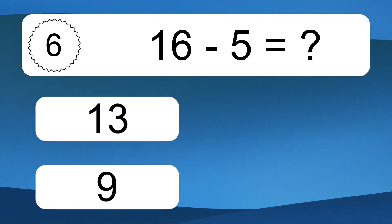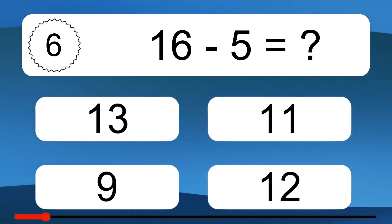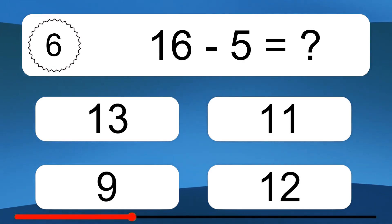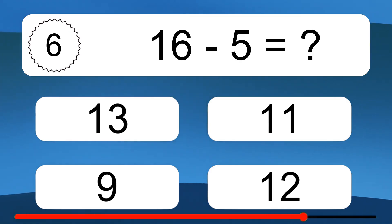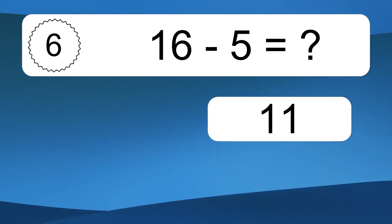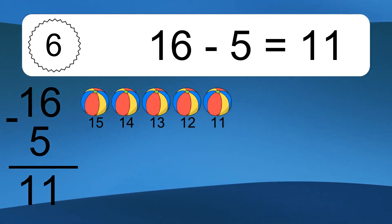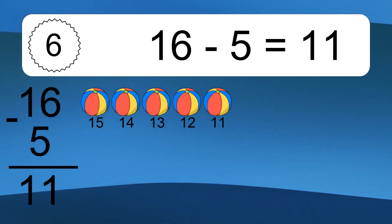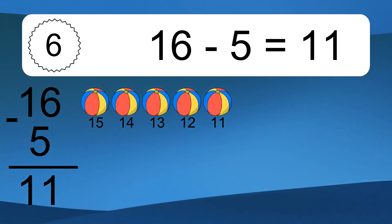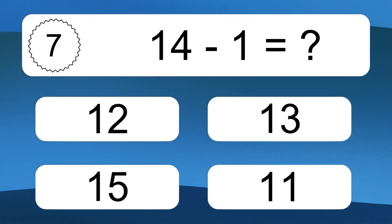16 minus 5 equals what? 16 minus 5 equals 11. Let's count it. 15, 14, 13, 12, 11.